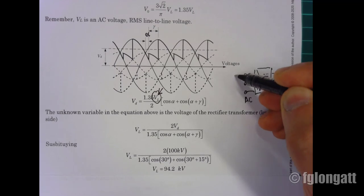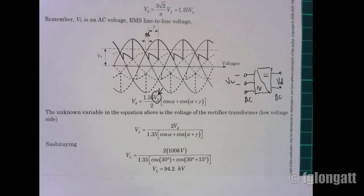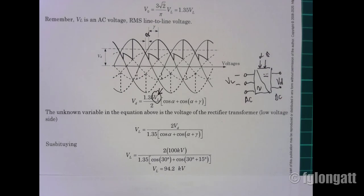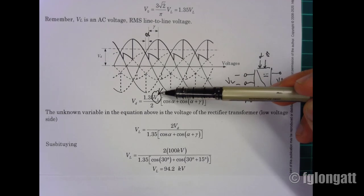As you must remember, here is coming alpha and also gamma. What I am doing here is extracting from this equation the unknown variable, which is the line-to-line voltage.